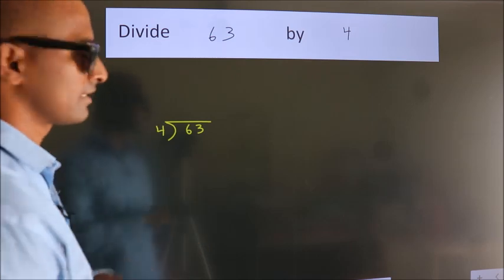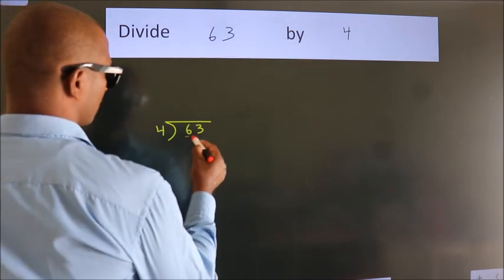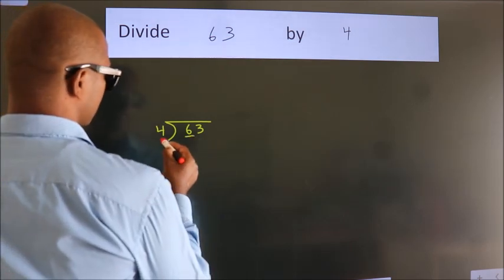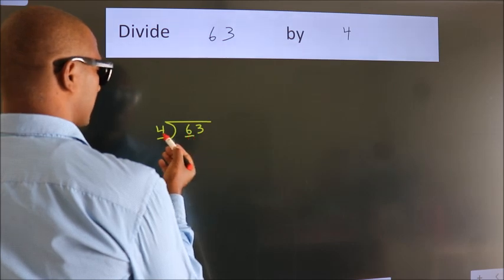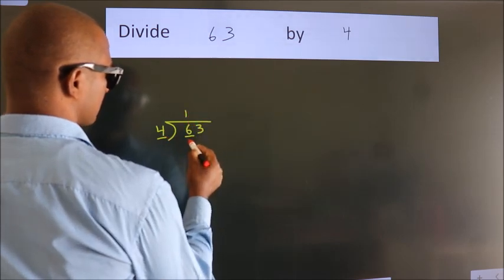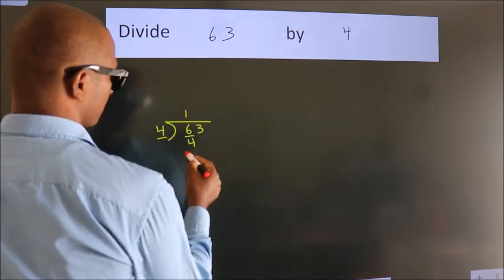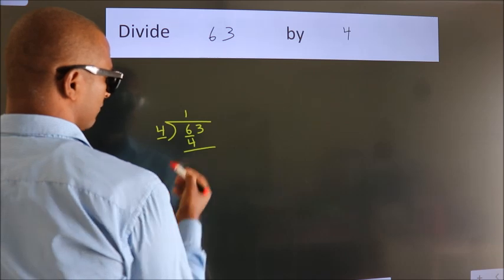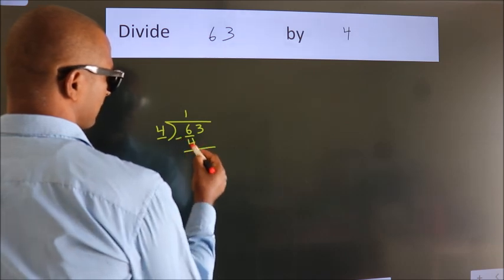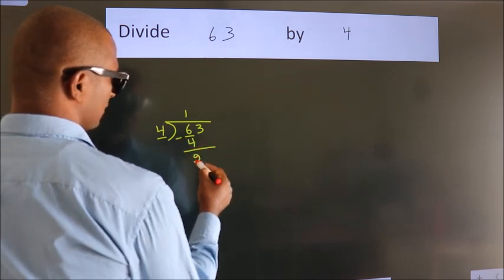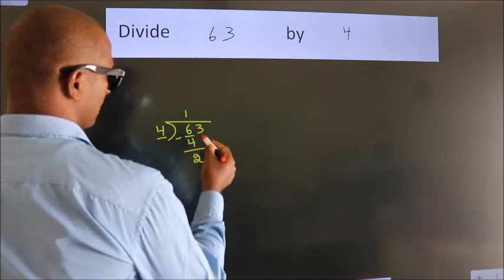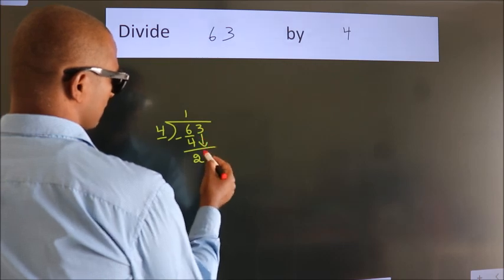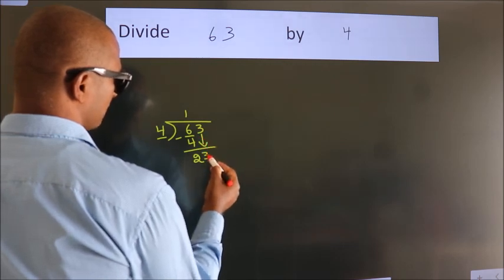Next, here we have 4, here 6. A number close to 6 in the 4 table is 4 once 4. Now we should subtract. We get 2. After this, bring down the beside number, so 3 down.